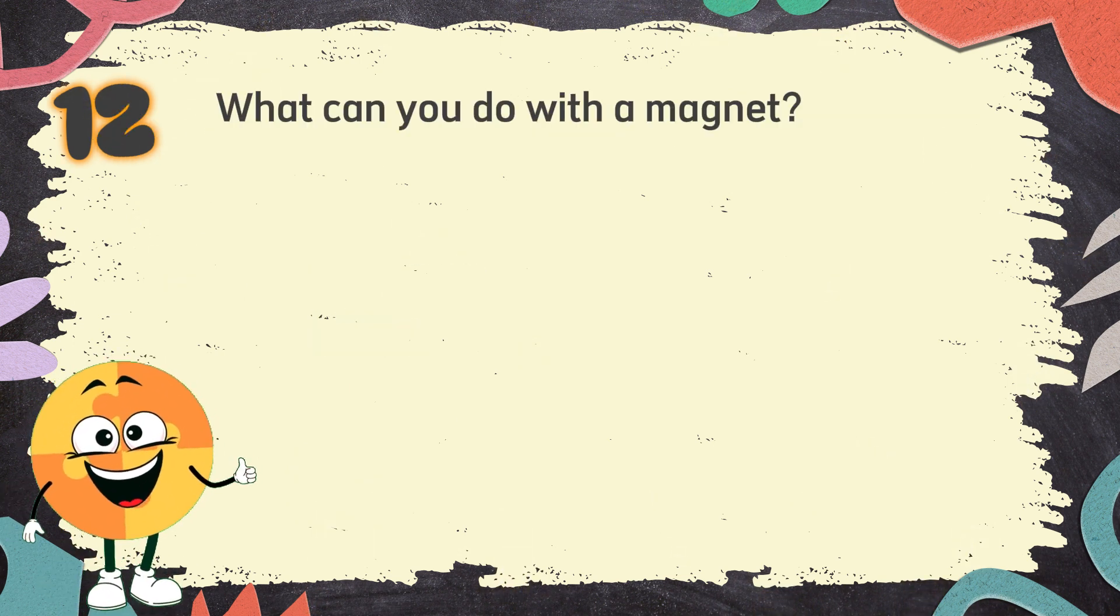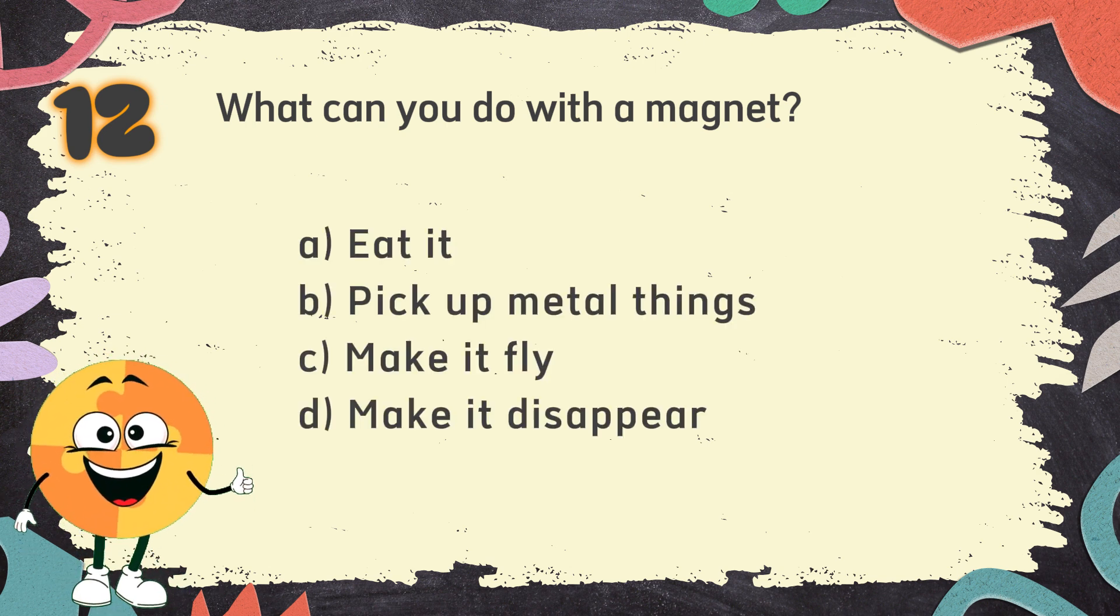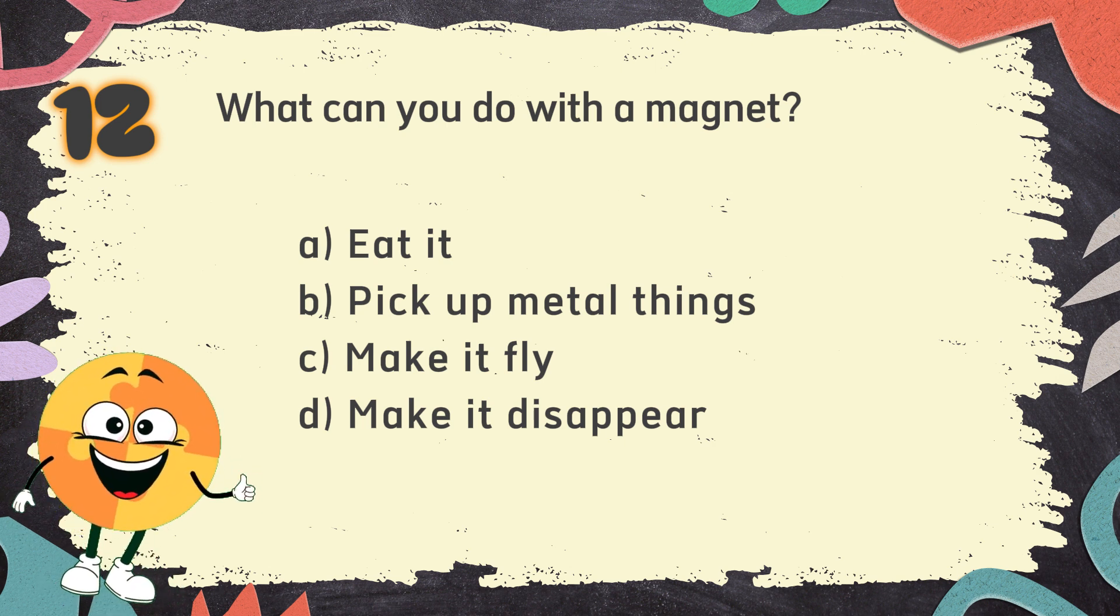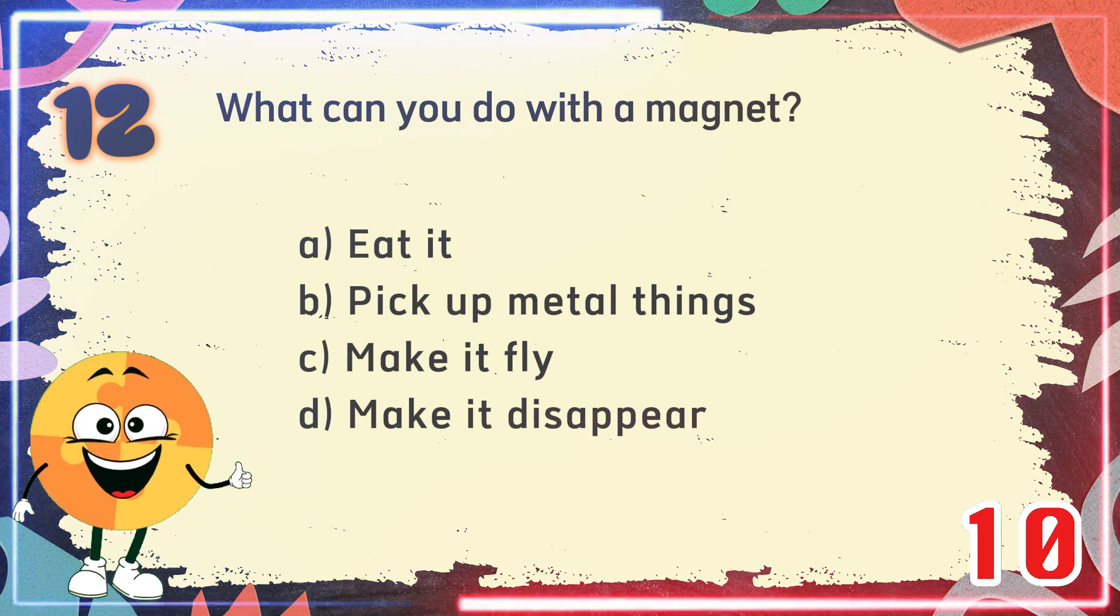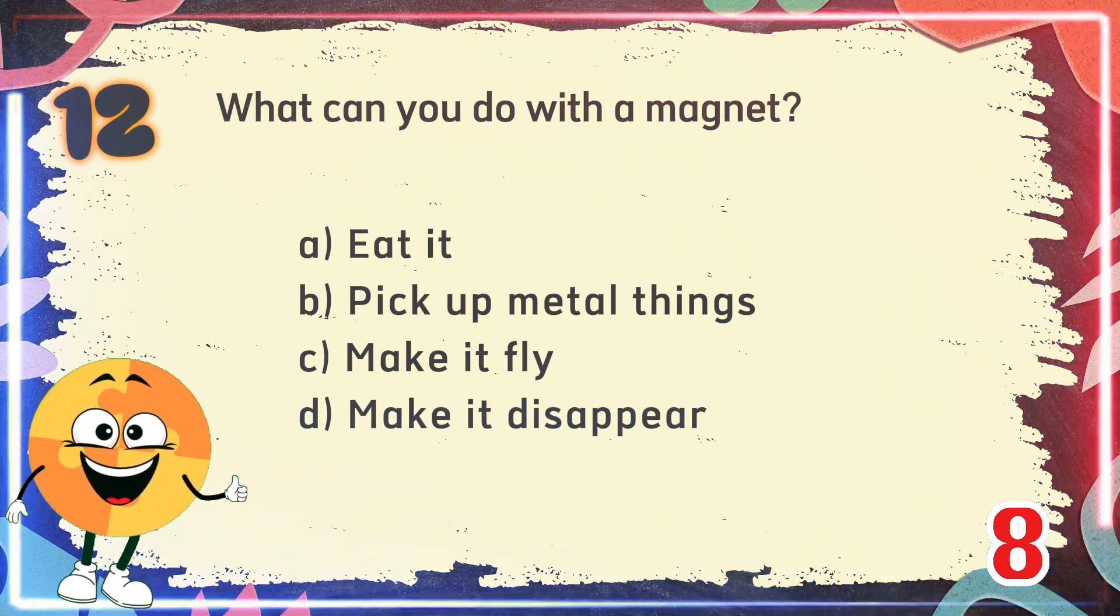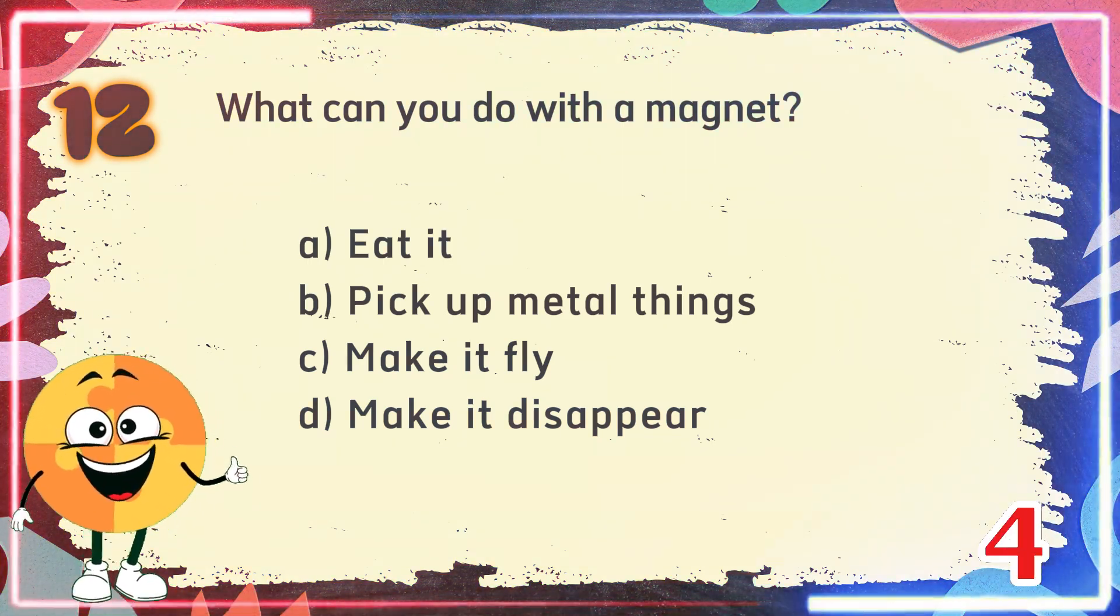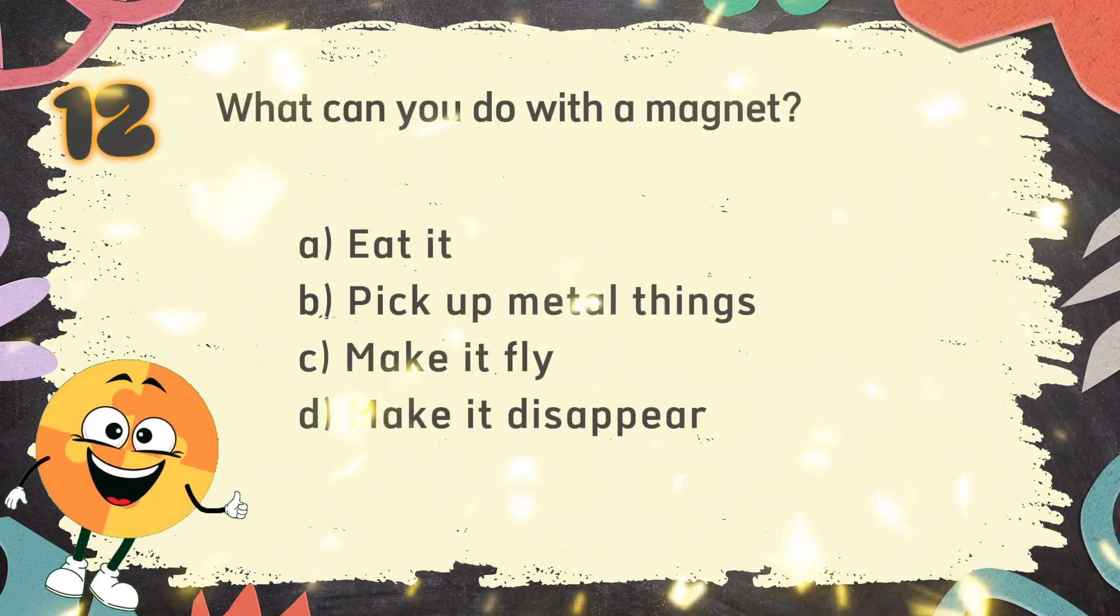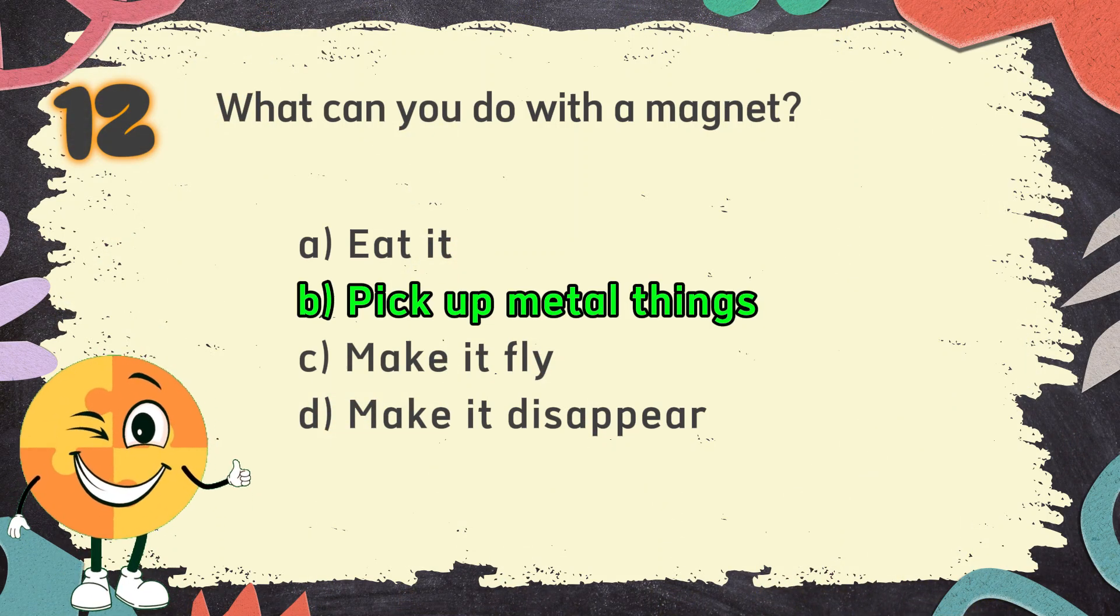Number 12. What can you do with a magnet? The choices are A. Eat it, B. Pick up metal things, C. Make it fly, D. Make it disappear. The correct answer is B. Pick up metal things.